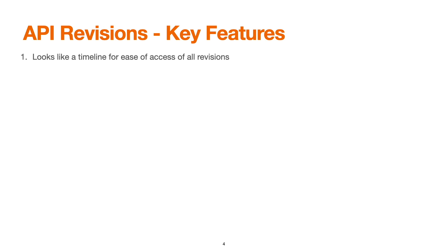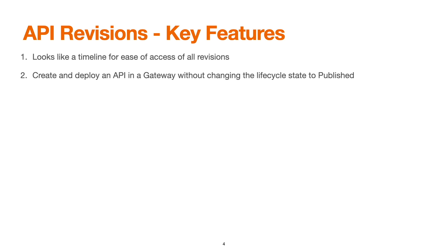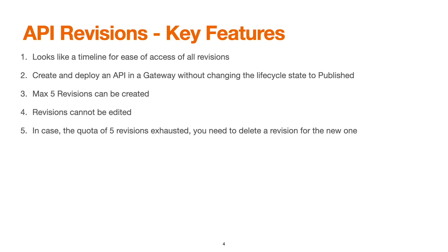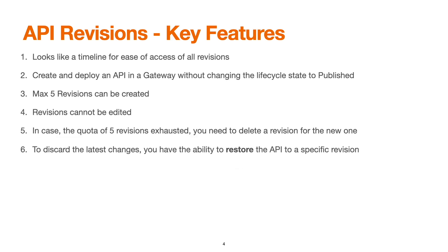API revisions appear as a timeline for easy access to all revisions. We can create and deploy on an API gateway without changing the lifecycle to published. Without publishing, we can deploy the API and test via the publisher test console. We can create a maximum of 5 revisions, and we cannot edit any revision once it has been created. If the quota of 5 revisions is exhausted, you need to delete a revision before a new one can be created.